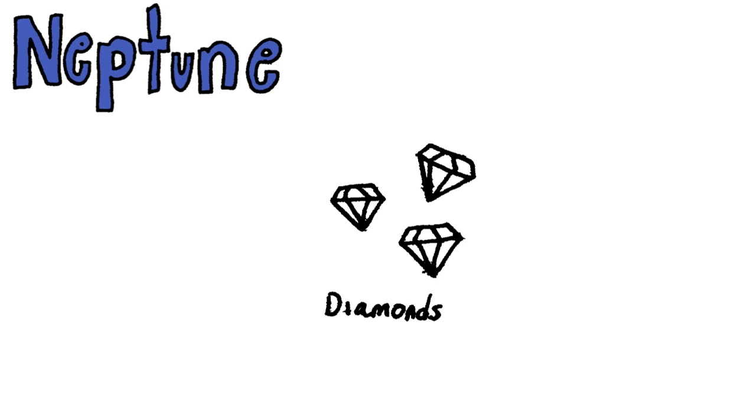Neptune sounds like an incredibly lovely place with diamonds literally falling from the sky, but when diamonds are combined with 1500 mile an hour winds, it ends up being less lovely and more like a planetary blender.